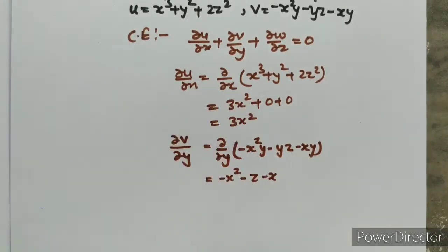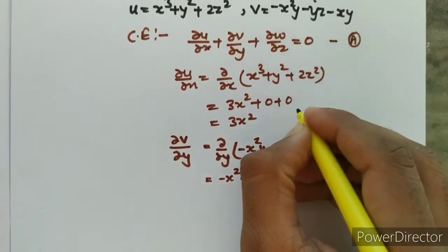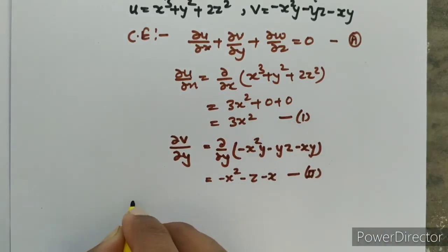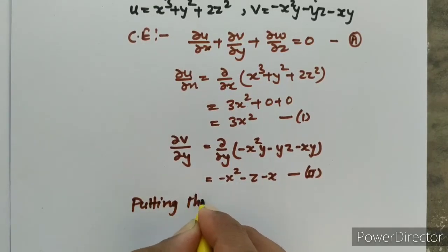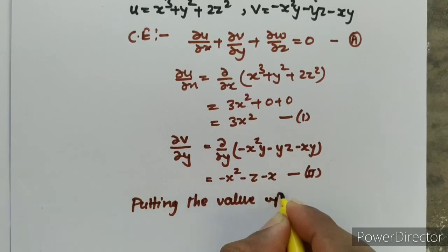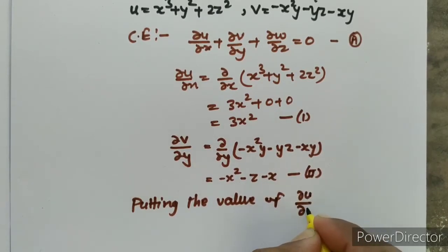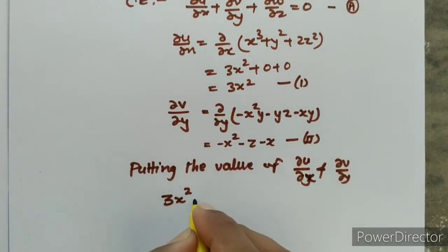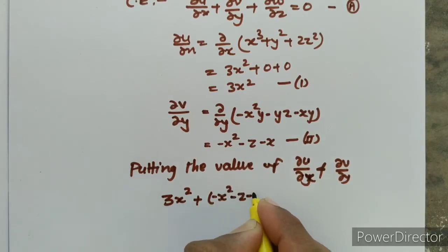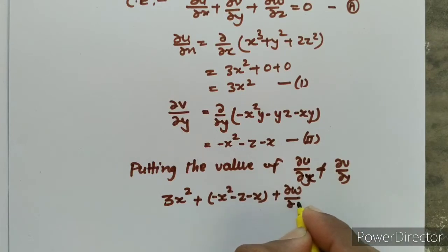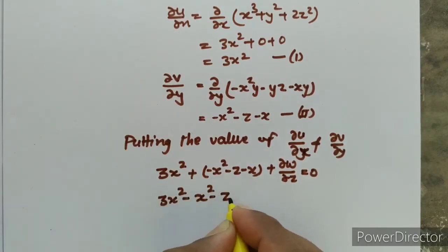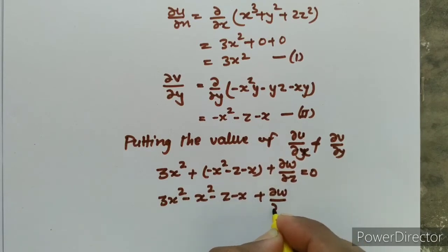We put it in the third equation. Putting the values of del u upon del x and del v upon del y: 3x squared plus (minus x squared minus z minus x) plus del w upon del z equal to 0. Simplifying: 3x squared minus x squared minus z minus x plus del w upon del z equal to 0.